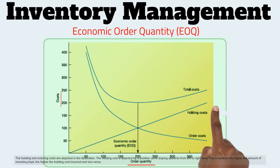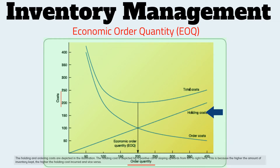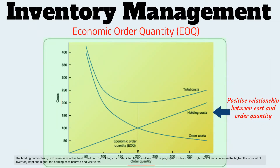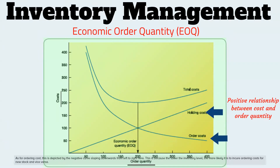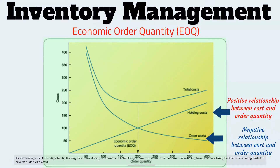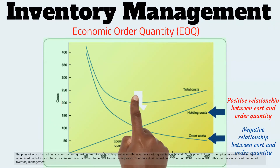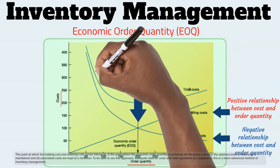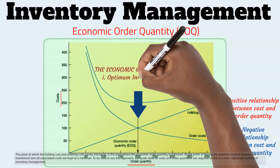The holding and ordering costs are depicted in the illustration. The holding cost is depicted by a positive curve sloping upwards from left to right, because the higher the amount of inventory kept, the higher the holding cost incurred, and vice versa. The ordering cost is depicted by a negative curve sloping downwards from left to right, because the lower the inventory level, the more likely it is to incur ordering costs for new stock. The point at which the holding cost and ordering cost curves intersect is the point where the economic order quantity is achieved. At this point, in theory, the optimum level of inventory is maintained and all associated costs are kept at a minimum.